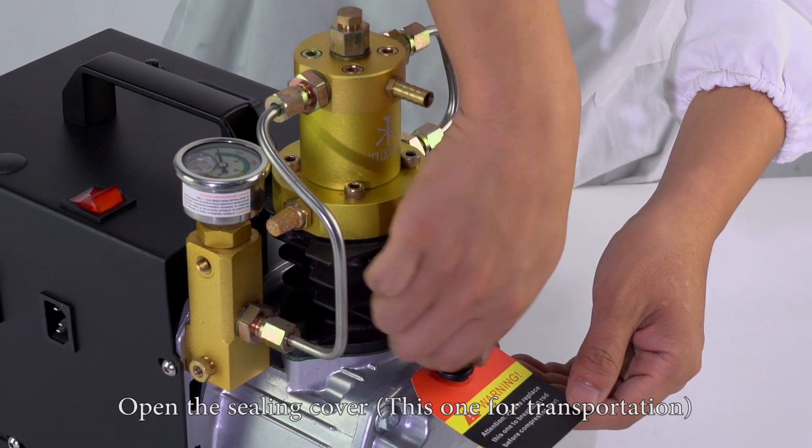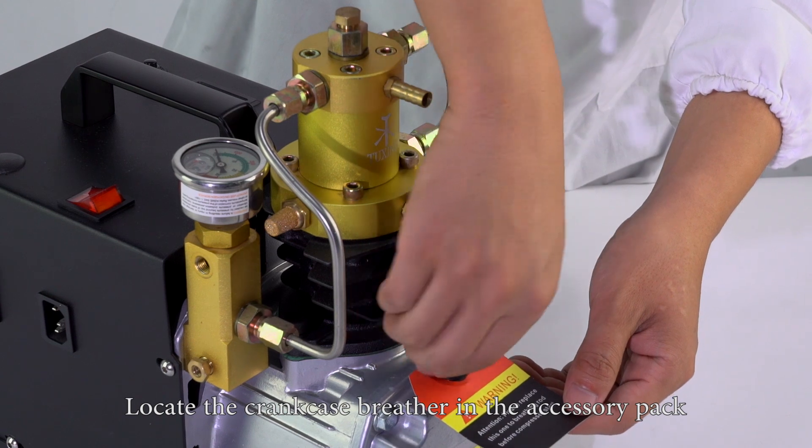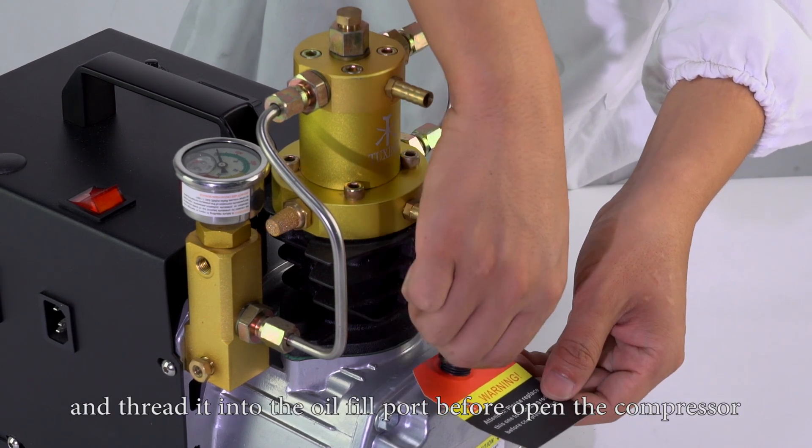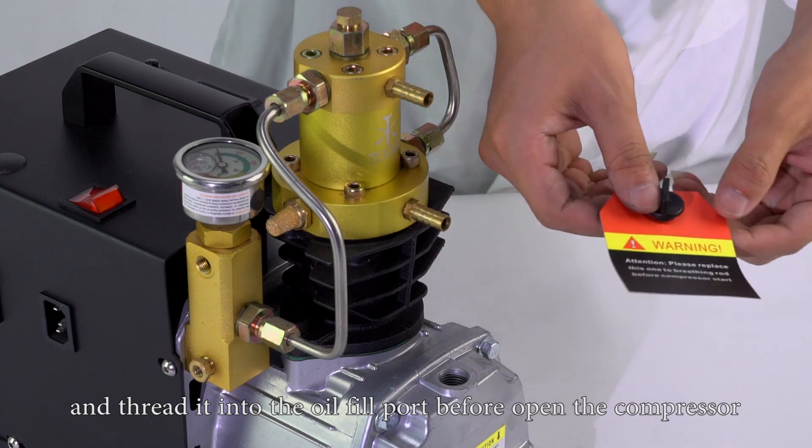This one is for transportation. Locate the crankcase breather in the accessory pack and thread it into the oil fill port before opening the compressor.